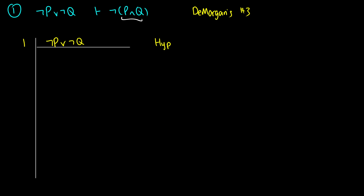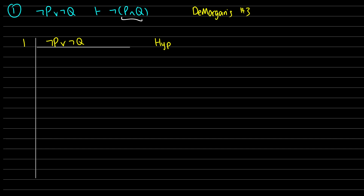Let's try some of these. First: from ¬P∨¬Q, we're proving ¬(P∧Q). Because there's a negation before P∧Q, what I want to do is assume that P∧Q is true. This is a hypothesis for contradiction — for RAA. I want to get a contradiction, and our result in the end is hopefully going to be that it is negated. So that is the goal for our first assumption.